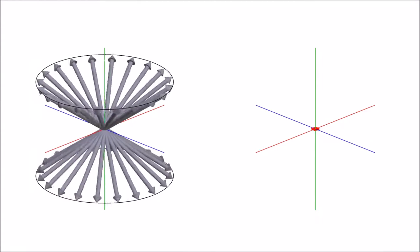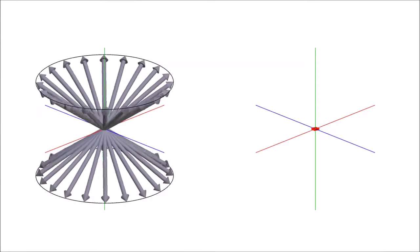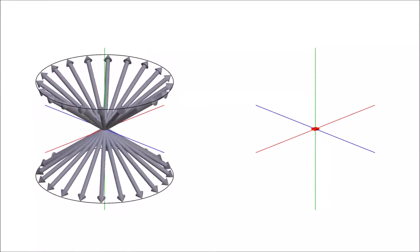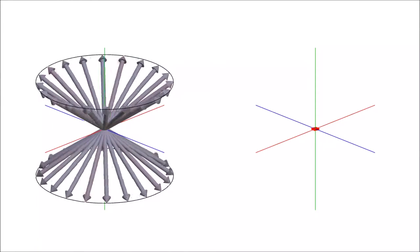Protons have a quantum property called spin, which can have one of only two values. Normally the two spin values are the same energy, so the protons are equally distributed between the two values.